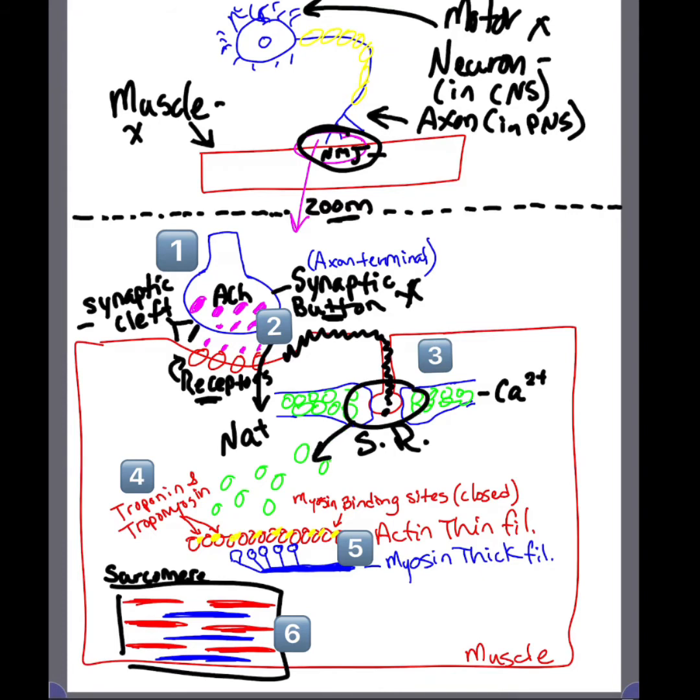Calcium is going to be released. It's going to go towards the actin thin filaments, particularly it's going to go towards troponin and tropomyosin, because troponin and tropomyosin are enclosing the myosin binding sites. And if the myosin binding sites are closed, that means that myosin cannot create a cross bridge with the actin thin filaments.